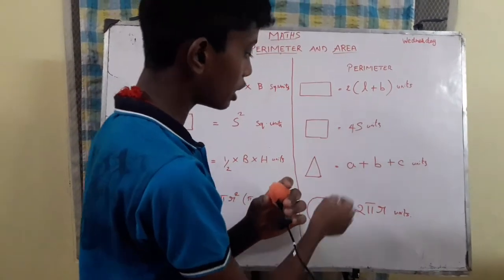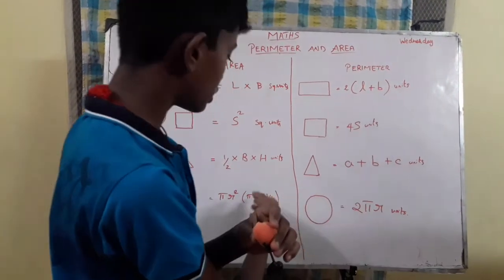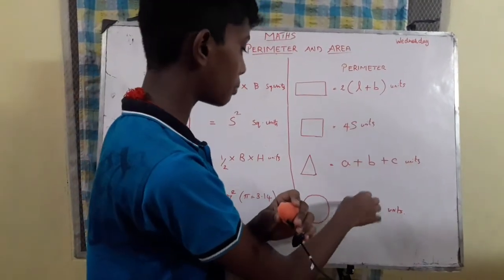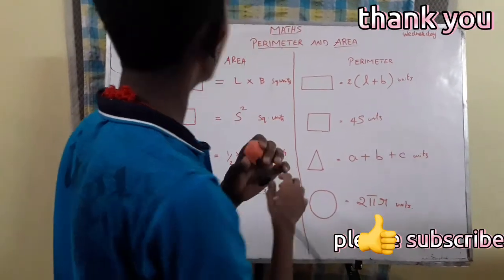Perimeter of circle. This uses the value of 3.14, 2 times 3.14, times the diameter. This is the video.